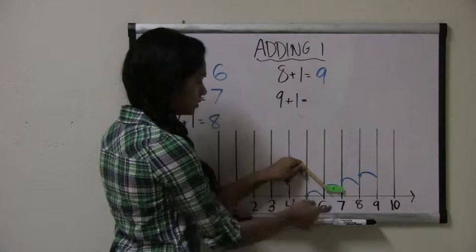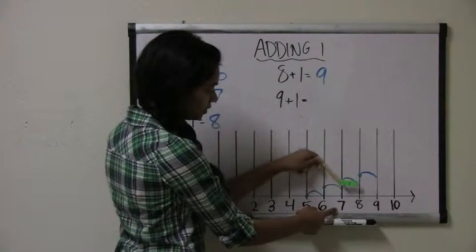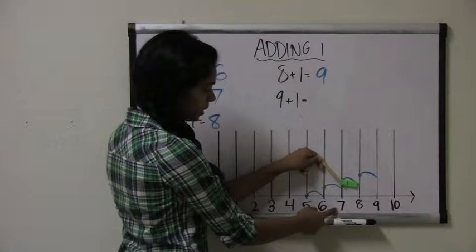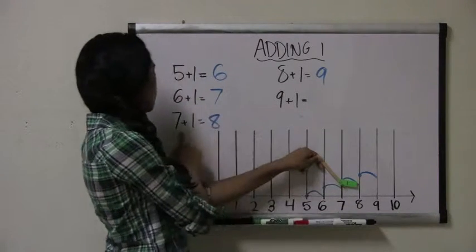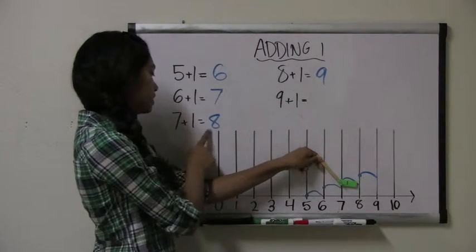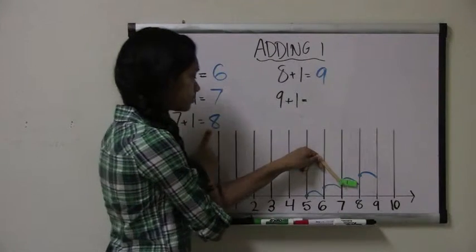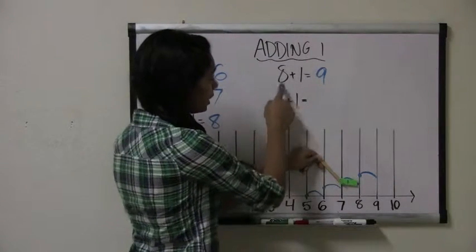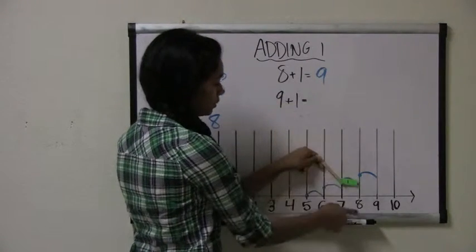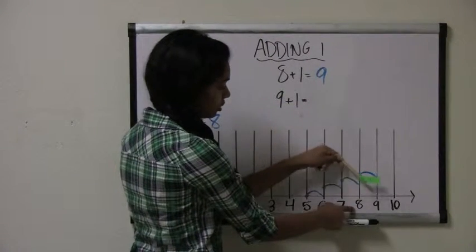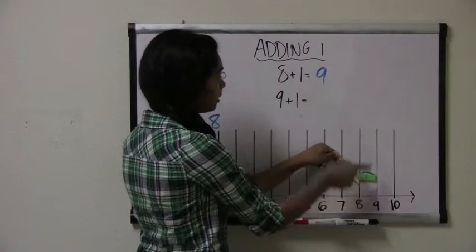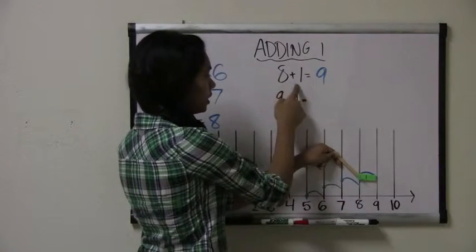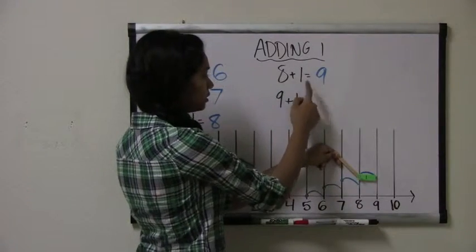For 7 plus 1, we start with the number 7 and we jump one spot to get to the number 8. So 7 plus 1 equals 8. For 8 plus 1, we start with the number 8 and jump one spot to get to the number 9. So 8 plus 1 equals 9.